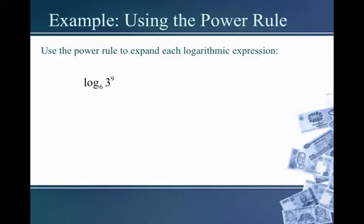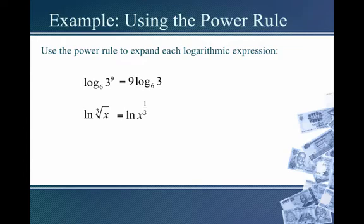For example, log base 6 of 3 to the ninth — using the power rule, the 9 pops out in front, giving us 9 times log base 6 of 3. Another example: ln of the cube root of x. I don't see a power, so step 1 is to rewrite x to a power using properties of exponents — rewrite that cube root as the one-third power. So ln of the cube root of x equals ln of x to the one-third. Now we use the power rule and bring that one-third out in front: one-third times ln of x.